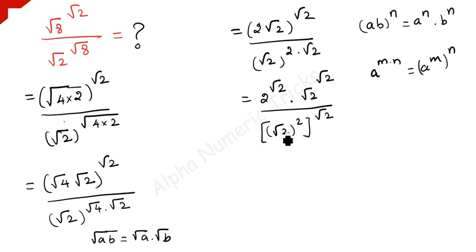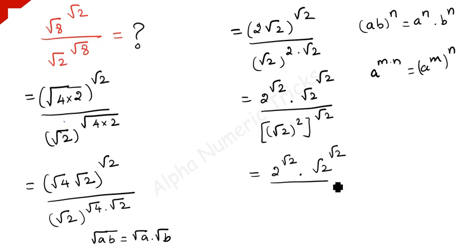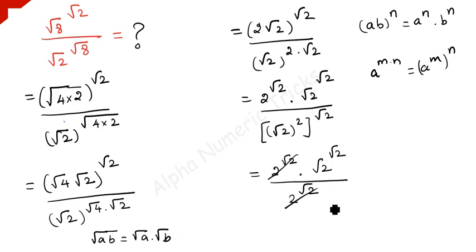So using this formula, we get 2 times square root of 2 to the power square root of 2, divided by square root of 2 squared, which is 2, to the power square root of 2. This term and that term get cancelled, which leaves us with square root of 2 to the power square root of 2.